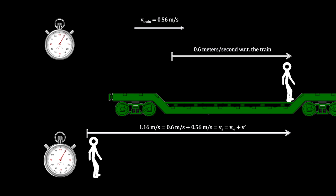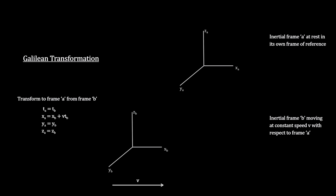You can see that we are simply adding the speed of the train to the speed of the person with respect to the train. This is the Galilean transformation between two reference frames moving at constant speed with respect to each other. These are called inertial frames because they are not experiencing any acceleration.